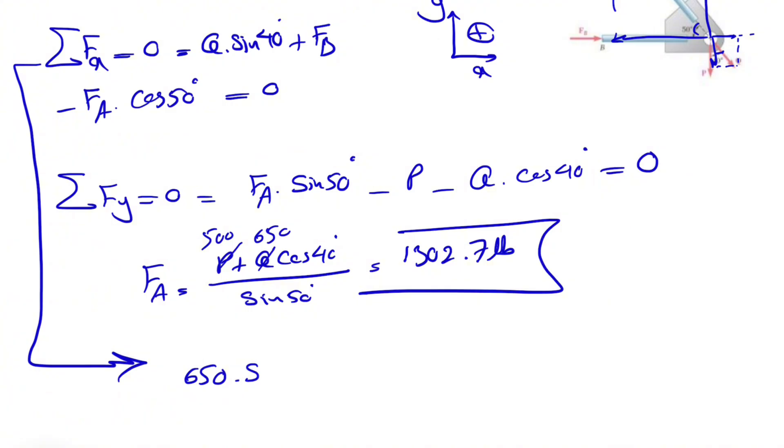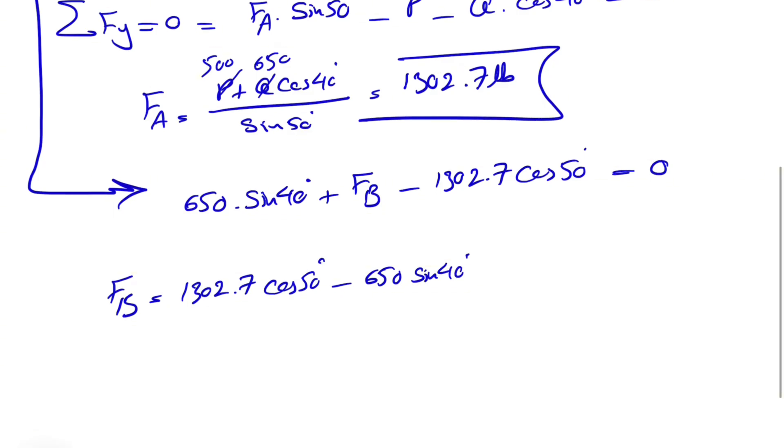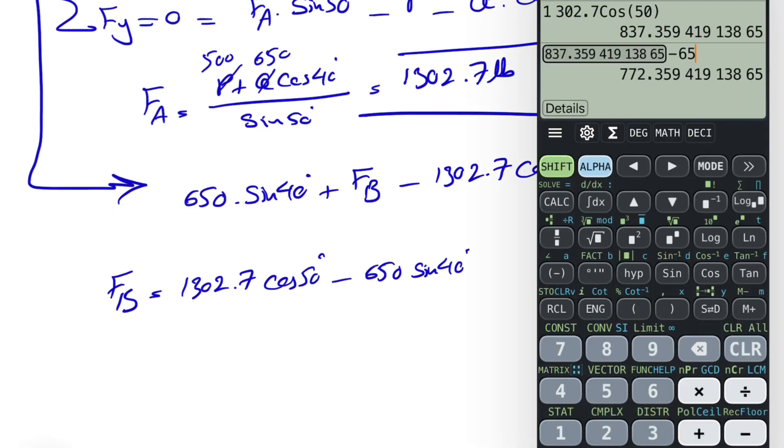So we're going to go with this equation. We have Q, which was 650 times sine of 40 plus FB, which is our unknown, minus FA. So minus FA, 1302.7 times cosine of 50, that will be equal to zero. So our FB in here would be 1302.7 cosine of 50 degrees minus 650 sine of 40.